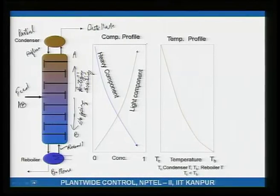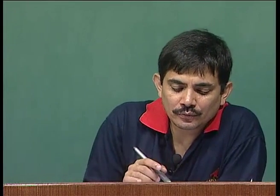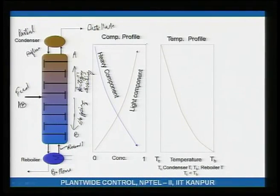This is called a simple distillation column: one feed stream producing two product streams — the distillate and the bottoms — with no side draws. If side draws are taken and stripped or rectified, or if there is a pre-fractionator and a main column, those are called complex column configurations.